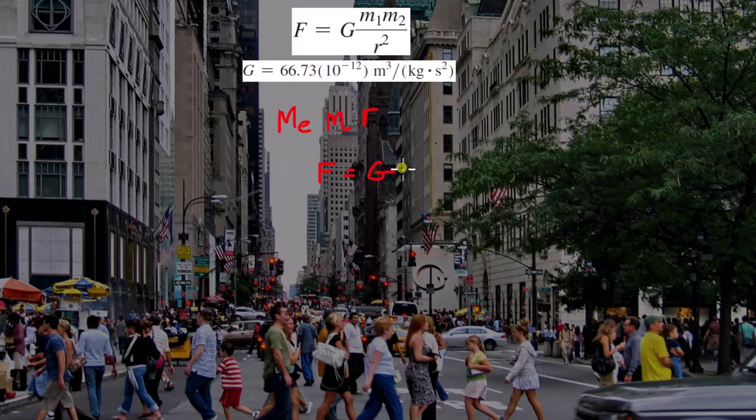is G times the mass of that object times the mass of the Earth over the distance between that object and the center of the Earth squared. And we can rearrange this and say that this force is equal to G-M-E over R squared times M.